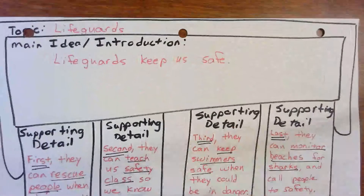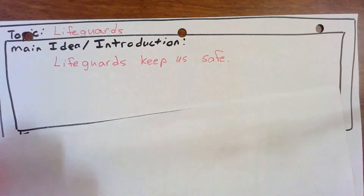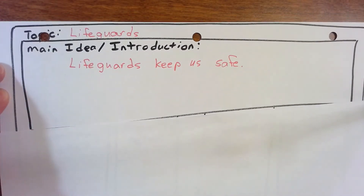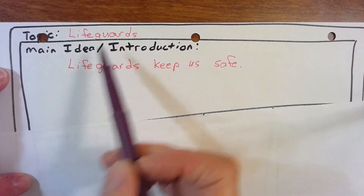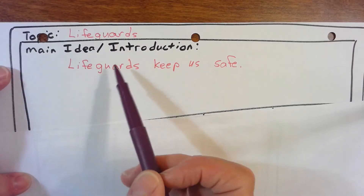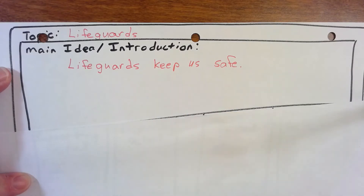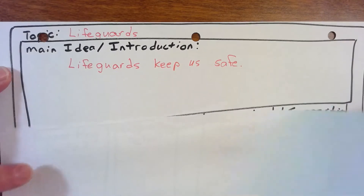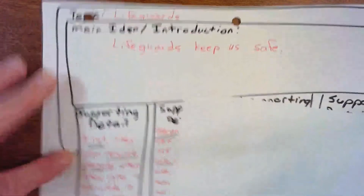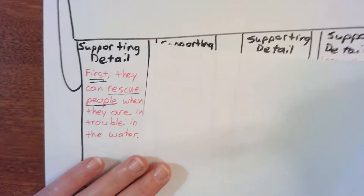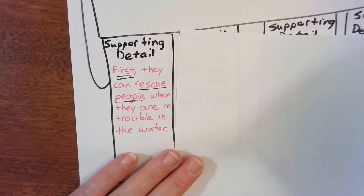Before we start writing we need to grab our tabletop and do our tabletop strategy. The topic or tablecloth is lifeguards. The main idea or introduction is going to be: lifeguards keep us safe.